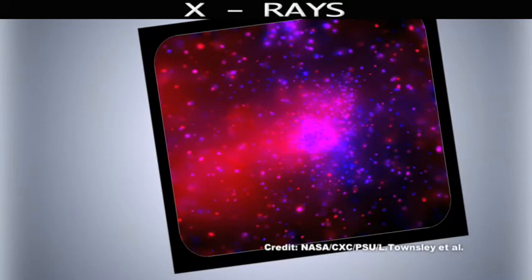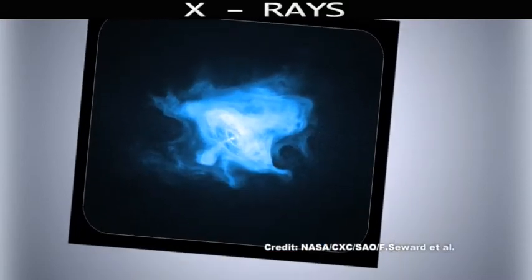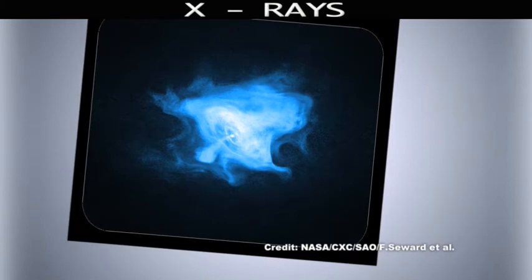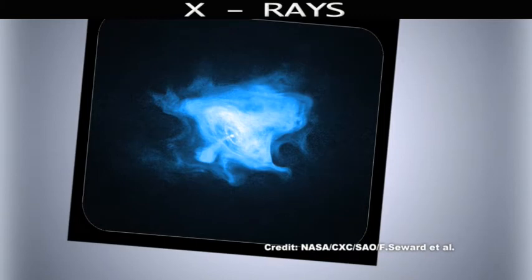This gives the Chandra Telescope an ability to look for X-rays that are being produced by far away objects in space, in a large region of the sky without the Earth blocking its view. With the help of special mirrors and a high-resolution camera, Chandra is able to see X-rays in action.